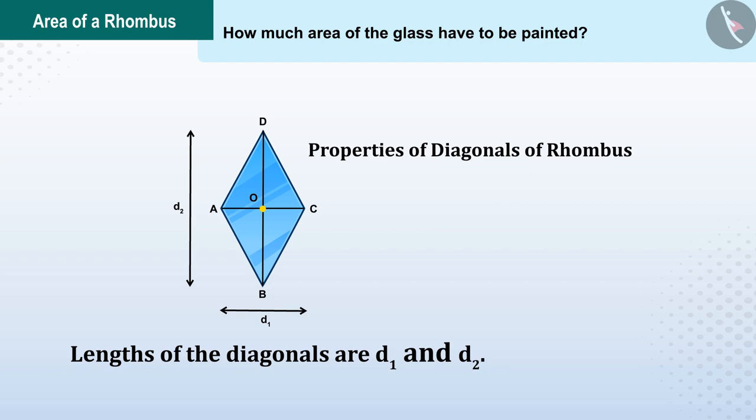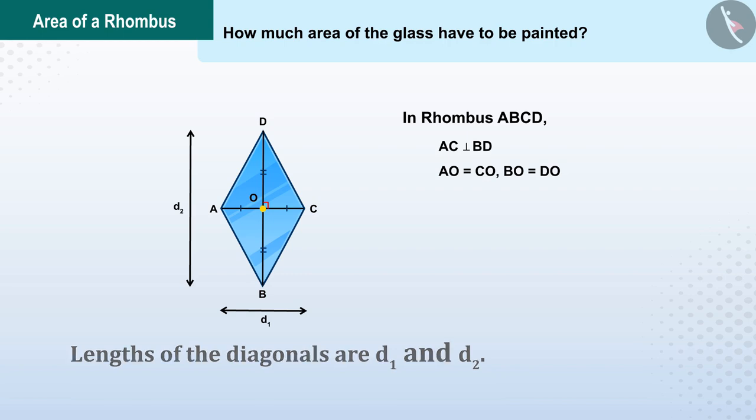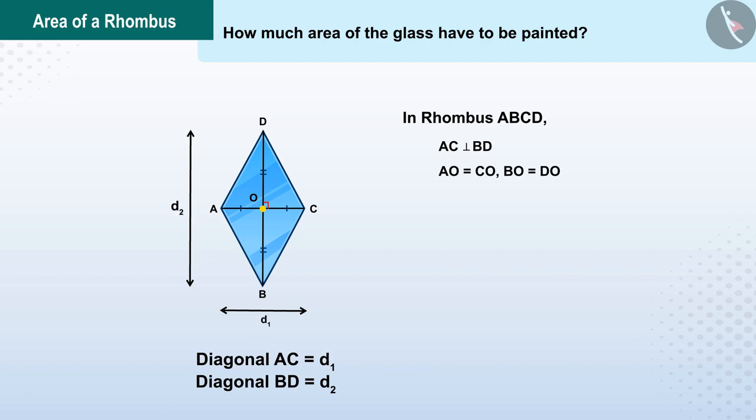Perfect. Diagonals AC and BD bisect each other perpendicularly. Let us write this: AC is perpendicular to BD, so AO equals CO and BO equals DO. In the question it is stated that the lengths of AC and BD are d1 and d2 respectively.